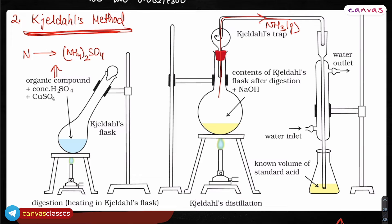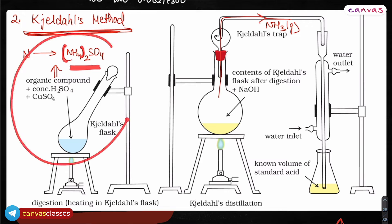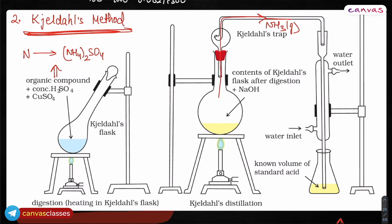So in digestion, the organic compound plus concentrated H₂SO₄ plus copper sulfate are heated together. This process is called digestion. Here, the nitrogen element in the organic compound is converted into ammonium sulfate. So in digestion, nitrogen is being converted into ammonium sulfate.